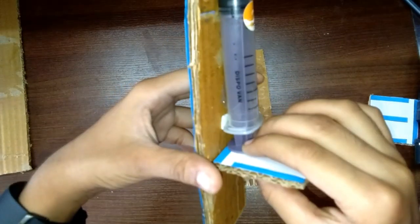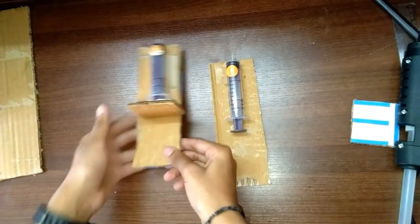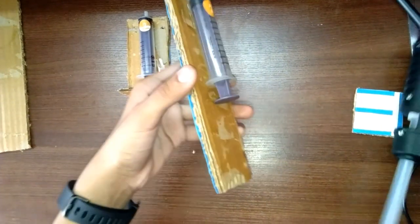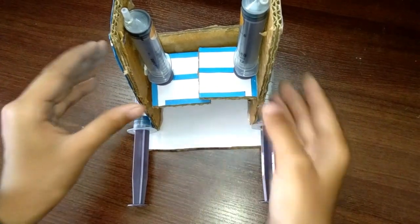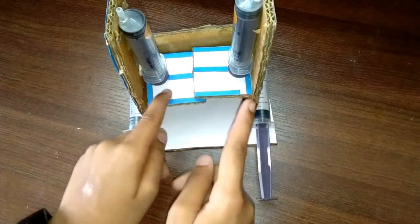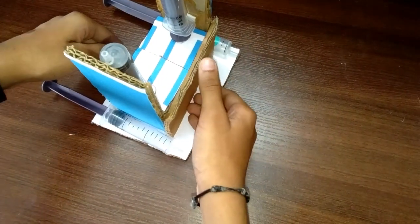Now I have pasted both the sticks and one should be on top of another one. For the support I have kept a small cardboard piece at the back. Paste another two syringes side by side. Let's connect the pipes with water.